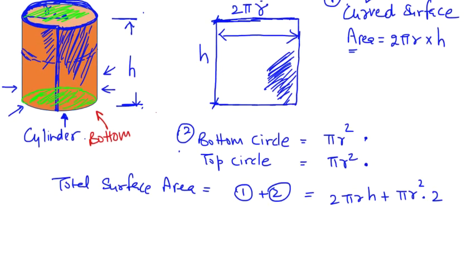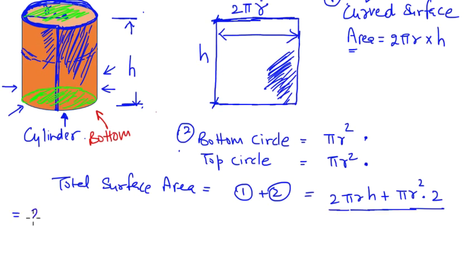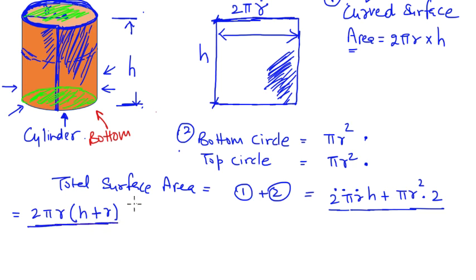You can simplify this a little further. Applying the reverse distribution principle of multiplication, take out the factor 2πr, and what remains inside the parenthesis is h plus r. So the expression for the total surface area of a cylinder is 2πr(h + r), where r is the radius and h is the height.